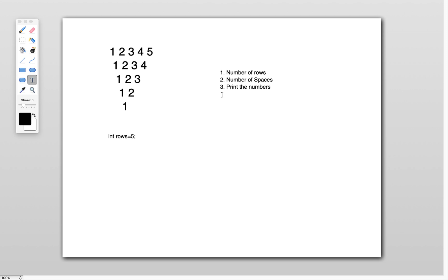Next, observe the number of spaces after each row. For the first row, one space; second row, two spaces; third row, three spaces; fourth row, four spaces; fifth row, five spaces. So each row, the spaces are getting increased. We need a for loop so that the spaces in each row are increased from one to five.